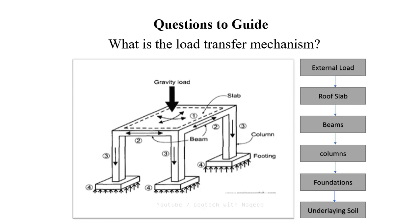Now let's discuss the load transfer mechanism — how the external load is transferred. This is also called the load path. Multiple elements are used to transmit and resist external loads within a building, and these elements define the mechanism of load transfer. The load path extends from the roof slab, then to the beams, then from the beams to the columns, and then from the columns to the foundations.